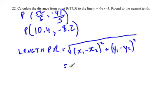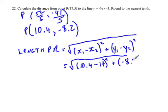This equals, subbing in—if we say point P is x₁—10.4 minus 17, squared, plus negative 8.2 squared.